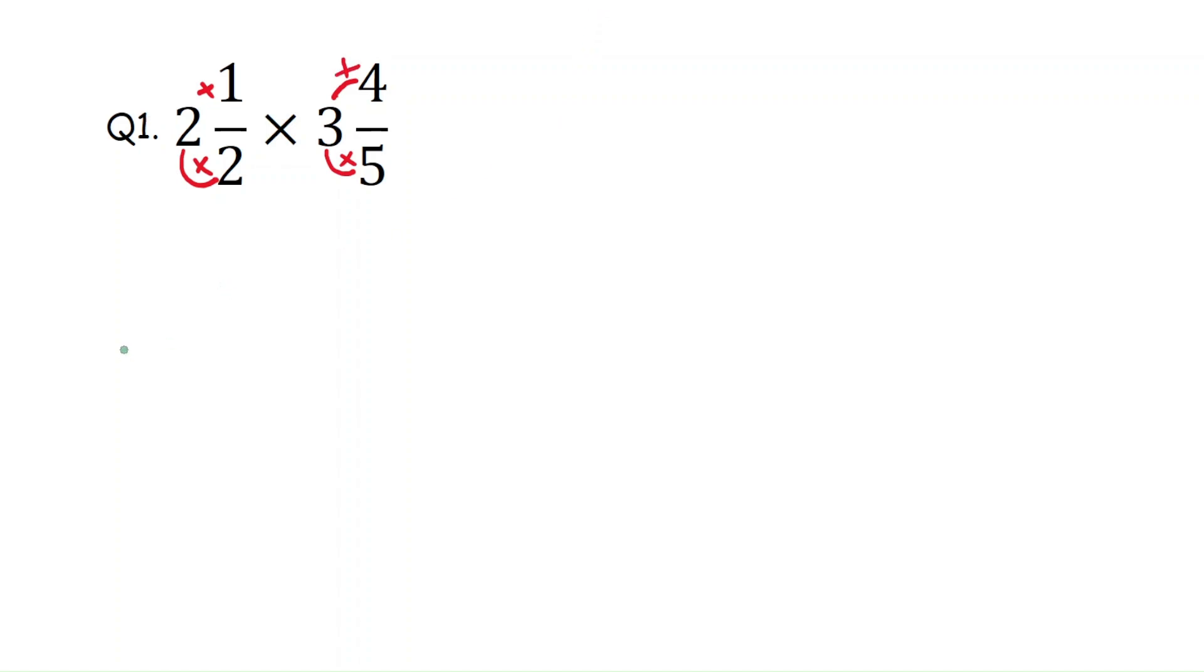Then that will be here 2 times 2 and add the numerator and write the denominator. The same way the second fraction: 3 times 5 plus the numerator, write the denominator. Then that will be 2 times 2 is 4 plus 1 is 5 by 2, times 3 times 5 is 15 plus 4, 19 by 5.